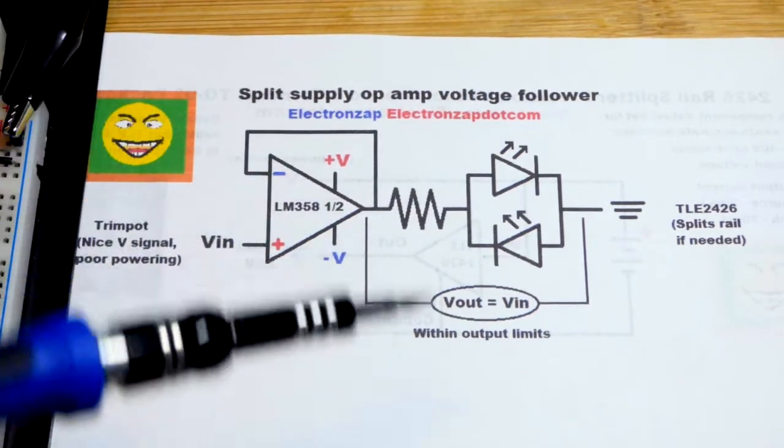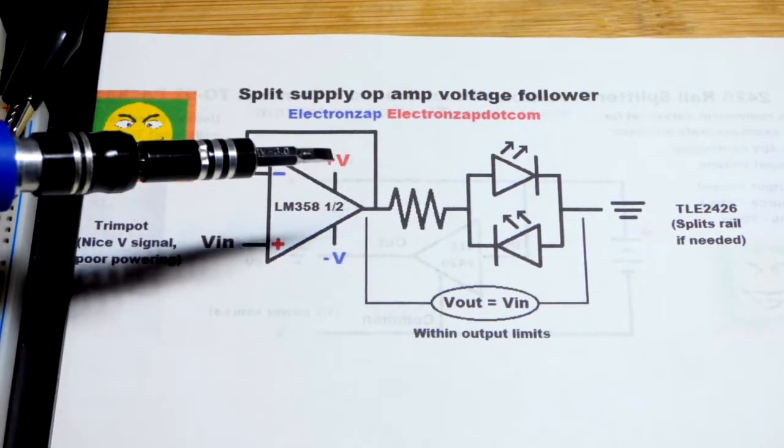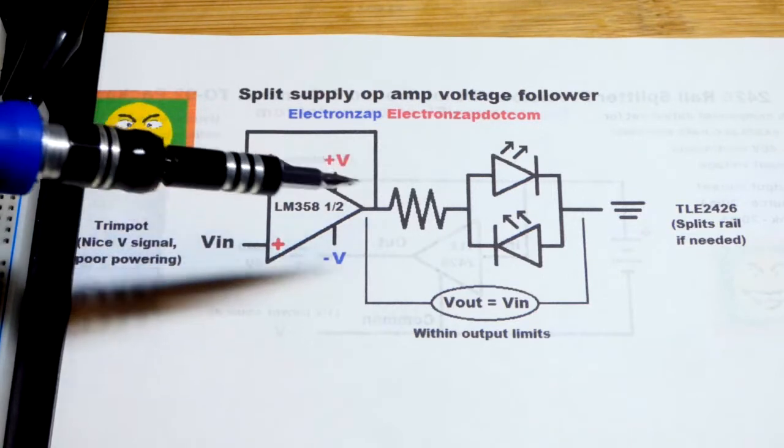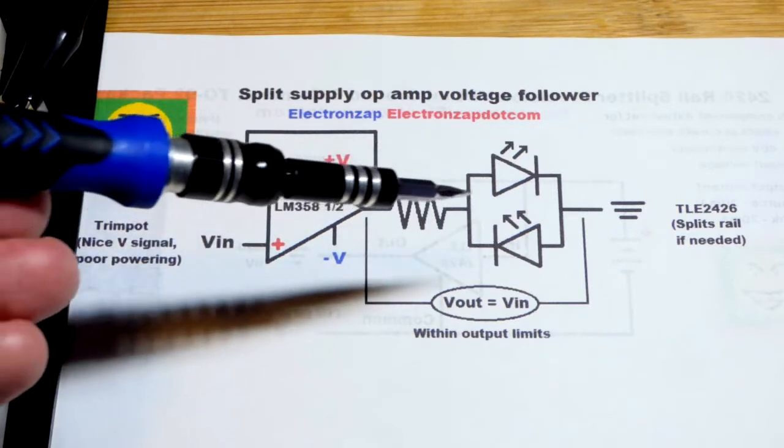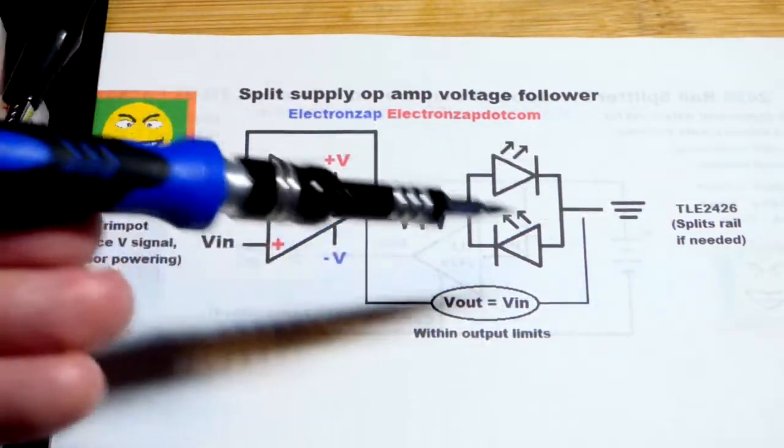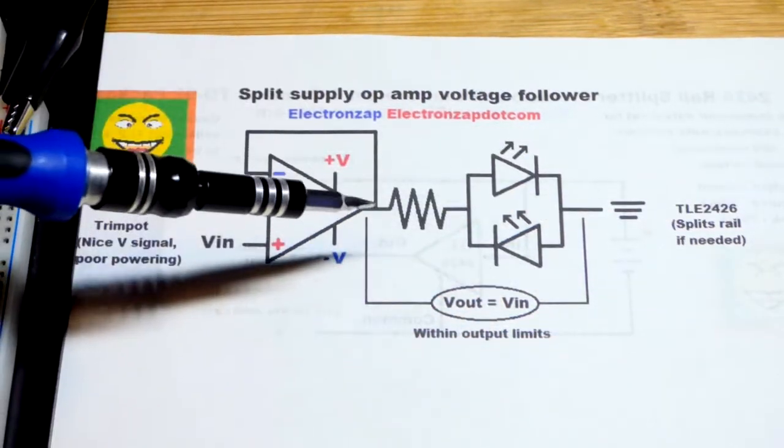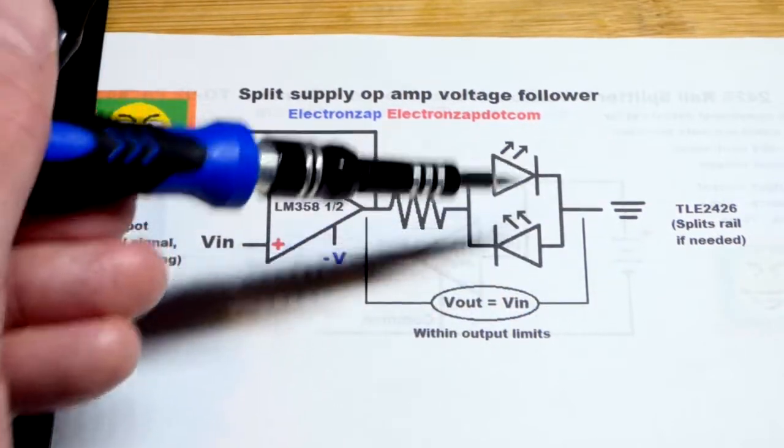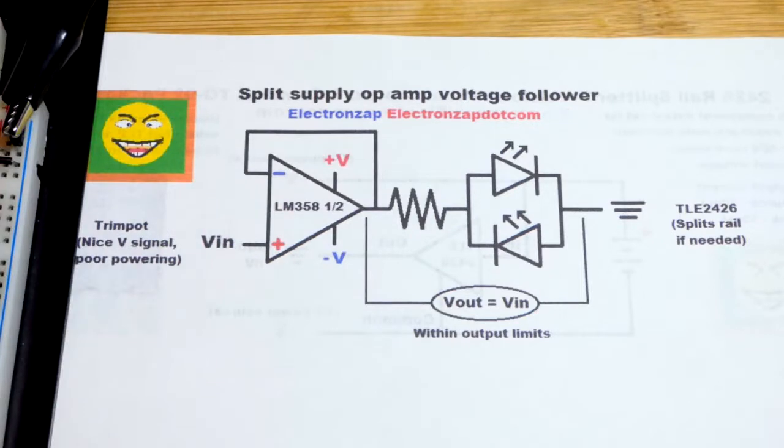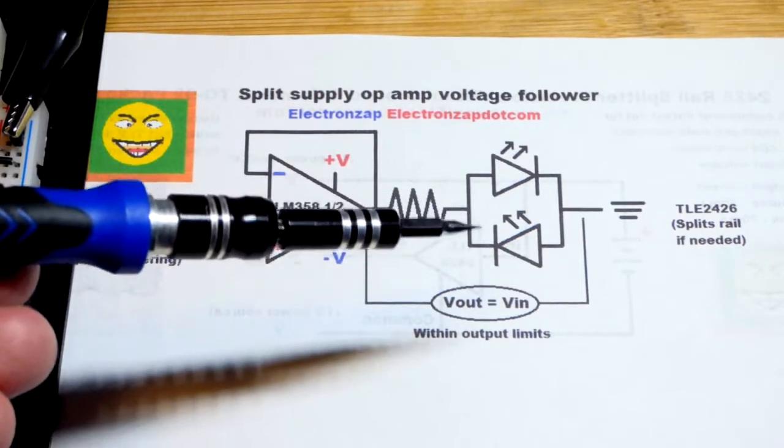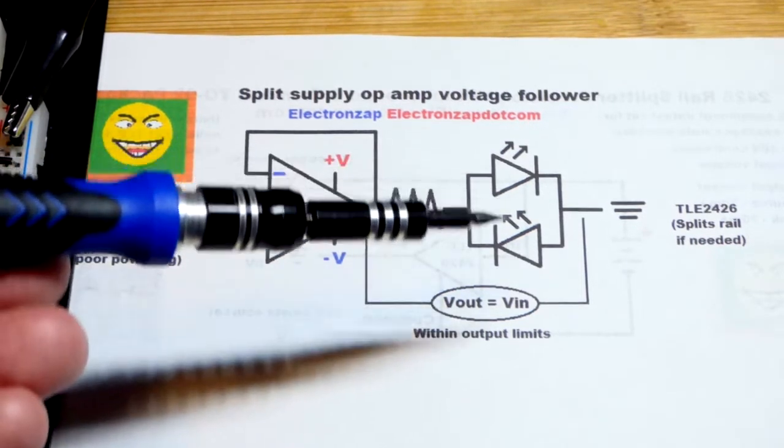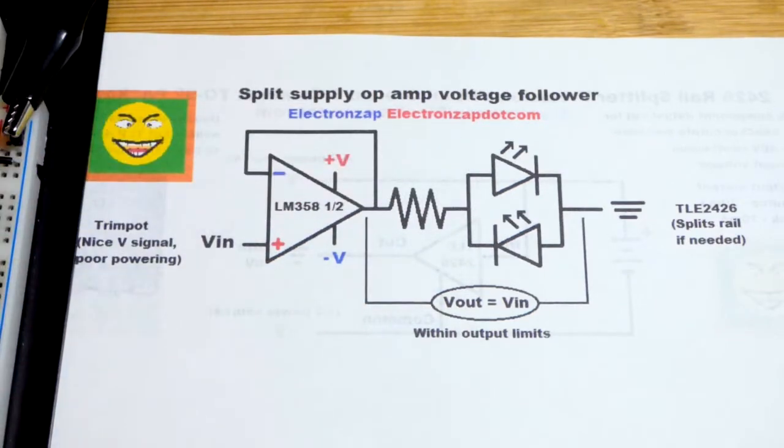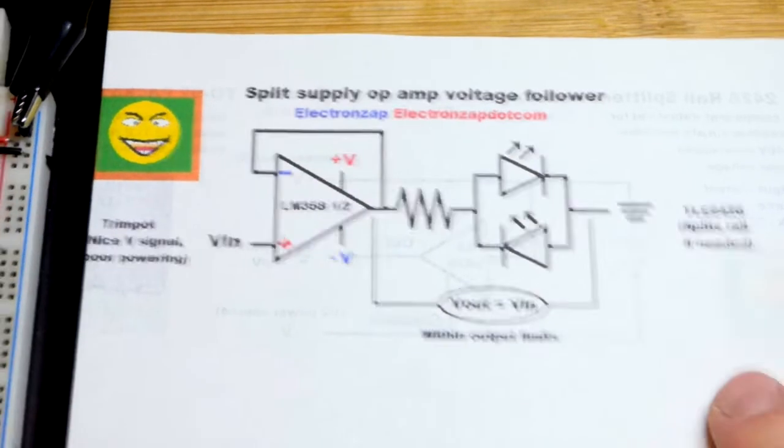Now since it's a split supply, when the voltage is higher than the halfway point or new ground, then the output will source current through one LED. It's a polarity indicator and when it is lower, more negative than the halfway point, then it will sink current. Of course these take a certain amount of voltage before they start conducting so it's not going to flip directly one to the other.